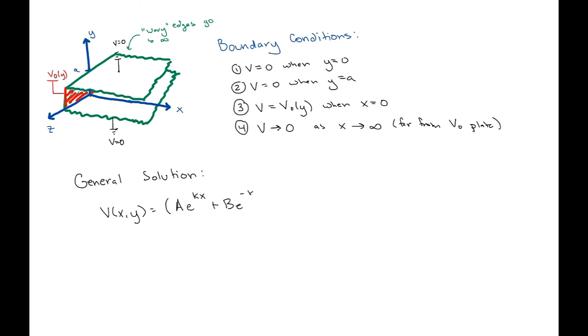That's our general solution, and now we're going to apply our boundary conditions and other things we know about the problem to find all those unknowns. That's A, B, C, D, and even little k.